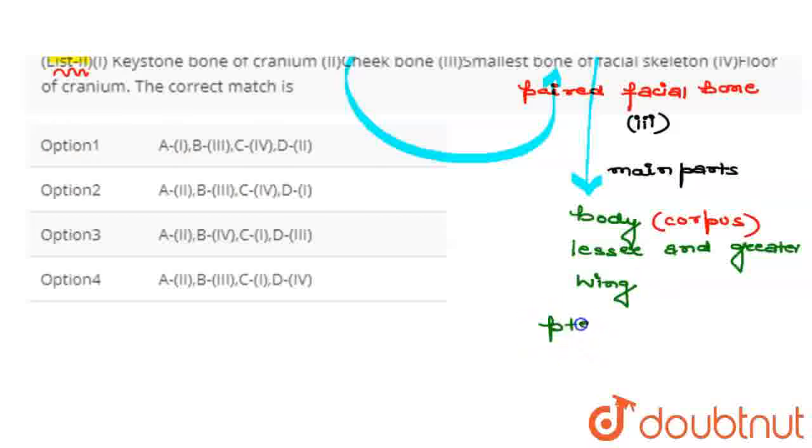Let's see the options. First option given here is A matches with first, so this option is wrong. Second option given is A matches with second, B matches with third, C matches with fourth, and D matches with first. So our correct answer here will be option second.